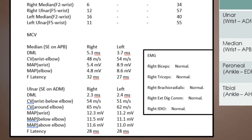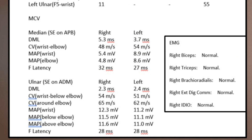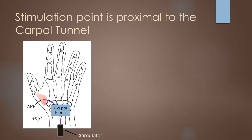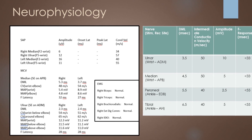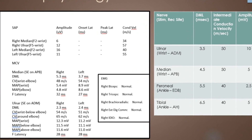Let's have a look now at the motor conduction velocities. The first thing to look at is the distal motor latency. On the right side it's 5.3ms, on the left side it's 3.7ms — the right one being prolonged, it's above the 4.5ms from our normative data parameters. The left side is normal. Considering the stimulation point is before the carpal tunnel and it's being picked up in the motor response of the APB muscle which is after the carpal tunnel, this is prolonged conduction across the carpal tunnel.